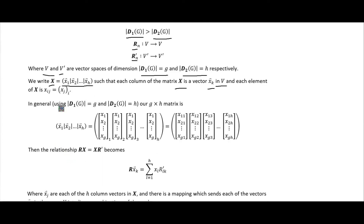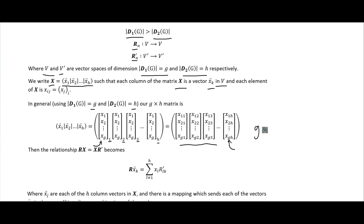We can write our matrix X as a collection of column vectors, each called X sub K, living in the vector space V. In general we have a G by H matrix. The columns are numbered from 1 all the way up to H, with G rows. Since we are assuming G is not equal to H, these are not square matrices.